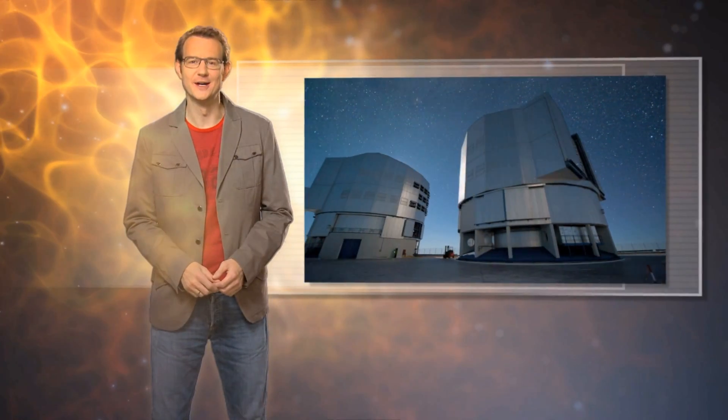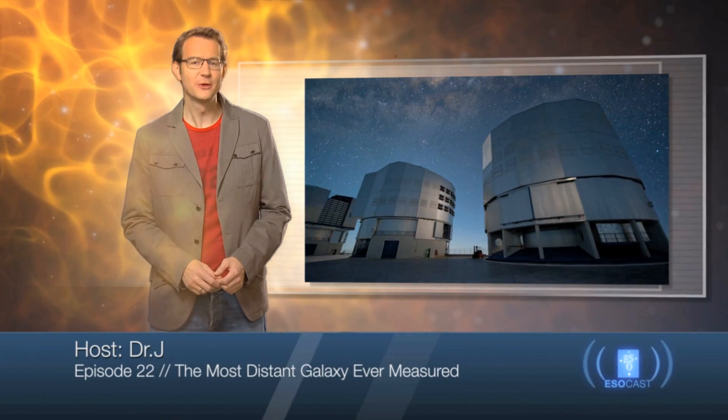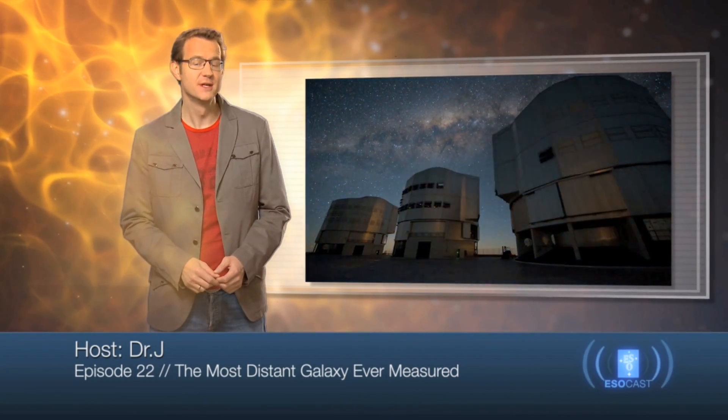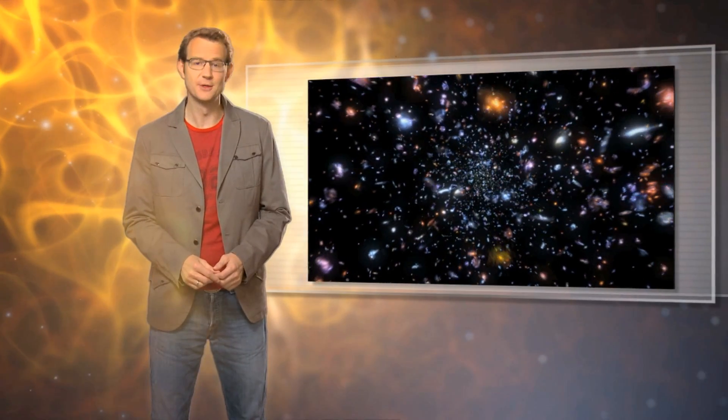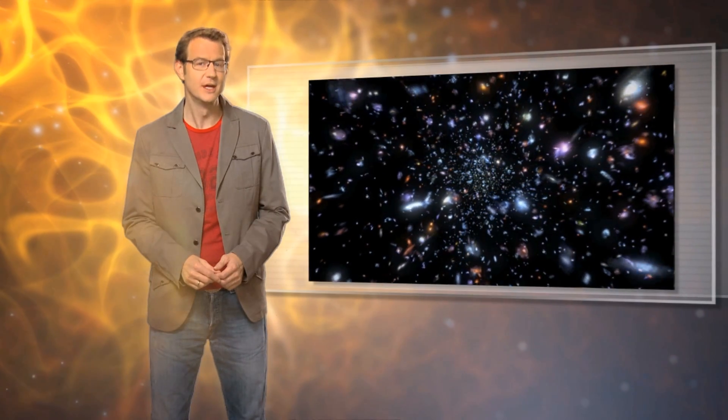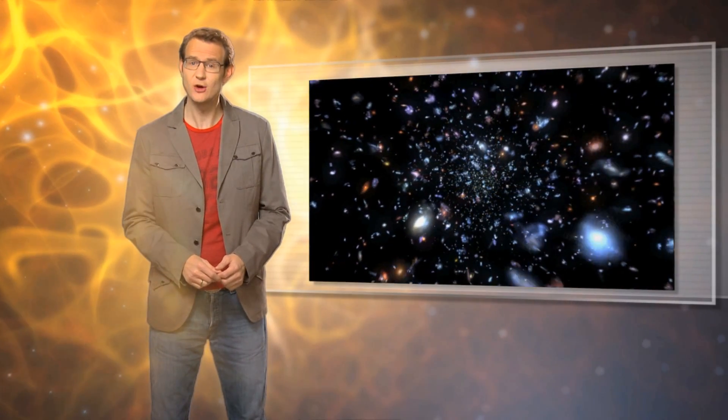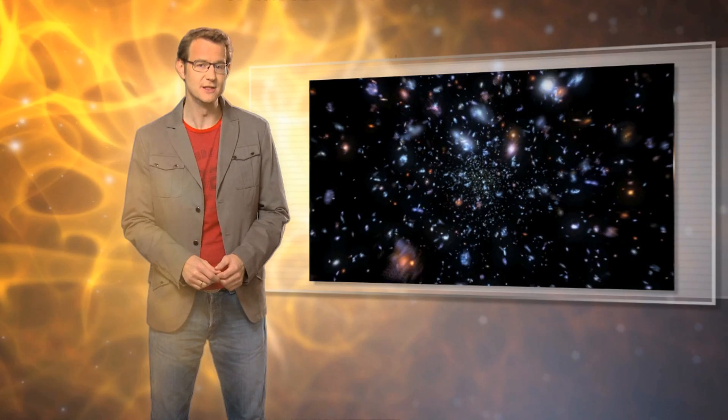Hello and welcome to the ESOcast. In this episode, we're going to find out how a team of astronomers used ESO's Very Large Telescope, the VLT, to confirm that a galaxy that had previously been spotted in images from the NASA-ESA Hubble Space Telescope is in fact the most distant object that has ever been identified in the universe.